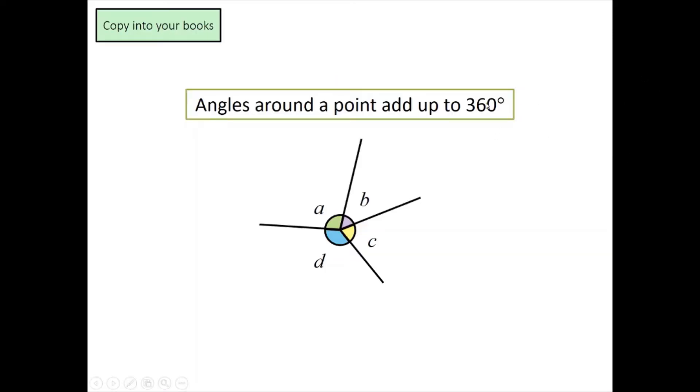Now, angles around a point add up to 360 degrees. If I have all these angles over here, I'm saying that A + B + C + D, this would equal to 360 degrees.